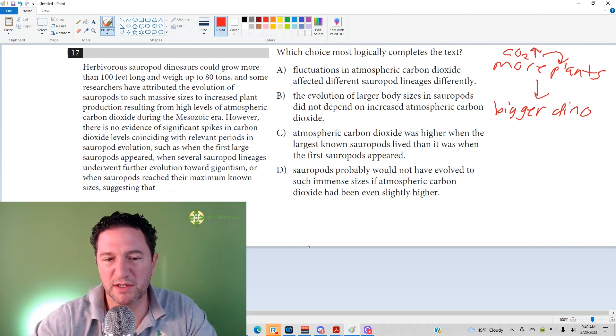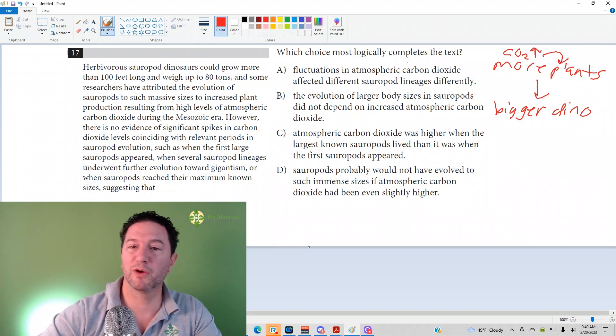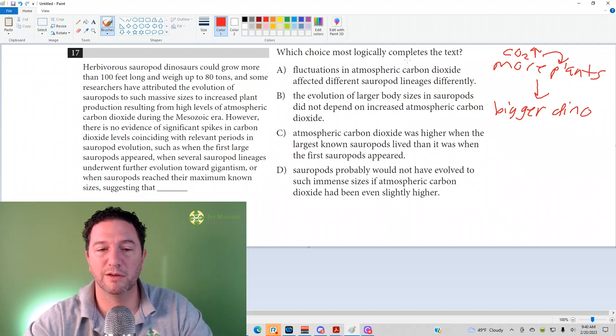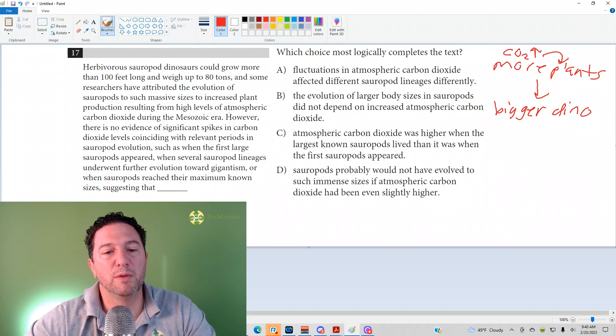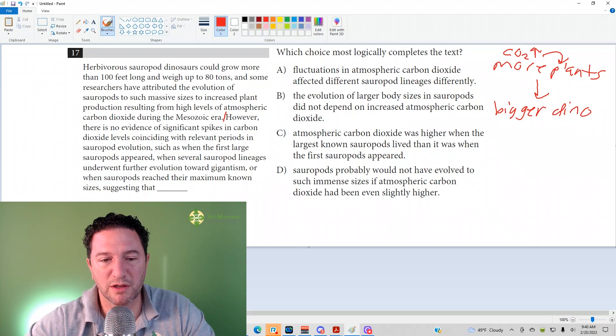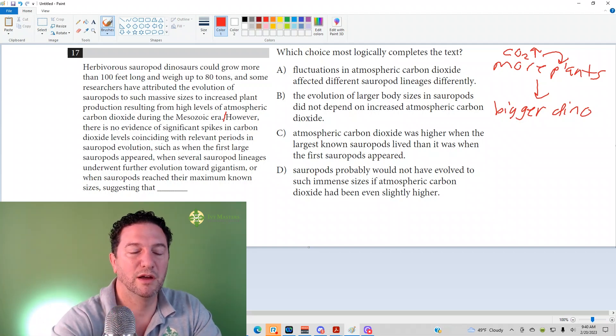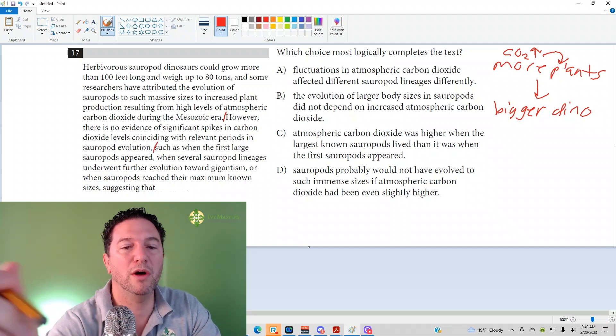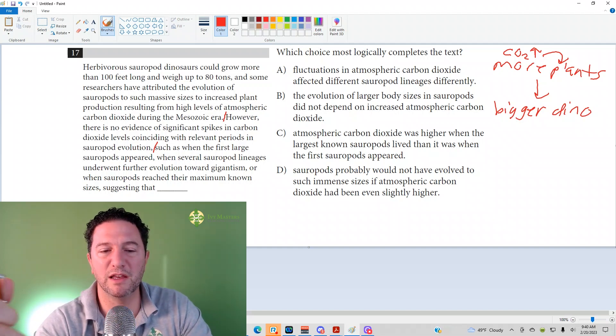Once you've established that, and feel free on test day to write on your test if this is helpful for you. We pick up with however: there's no evidence of significant spikes in carbon dioxide levels coinciding with relevant periods of sauropod evolution. I know it's just a comma, but we're going to pause there. Make sure you understand it. It's easier to understand it in pieces.